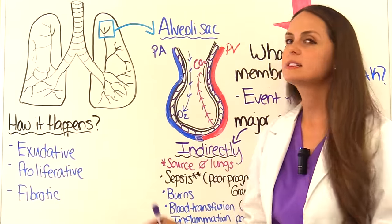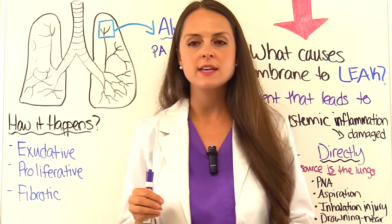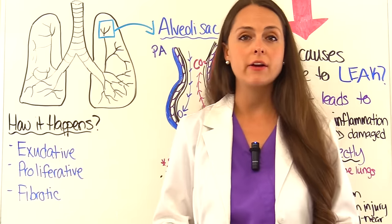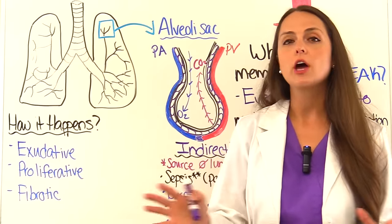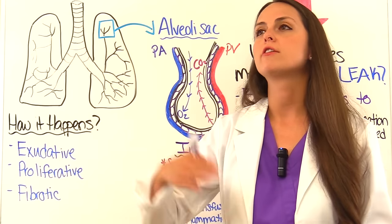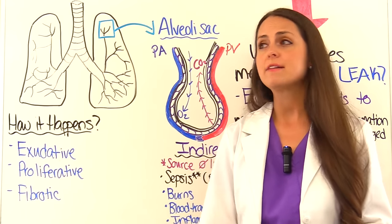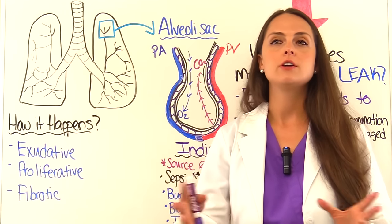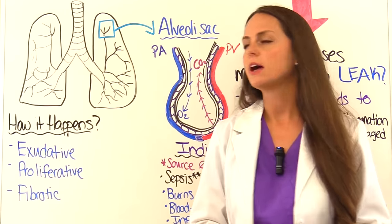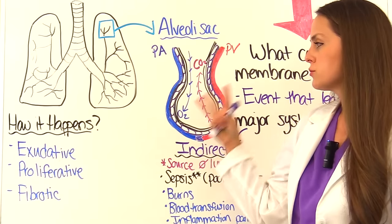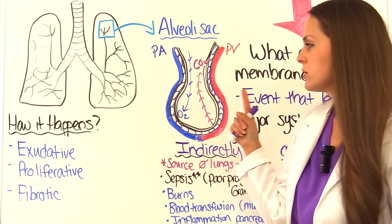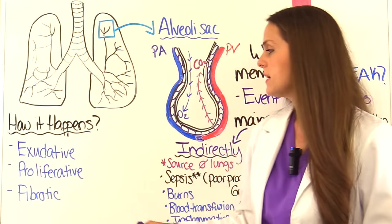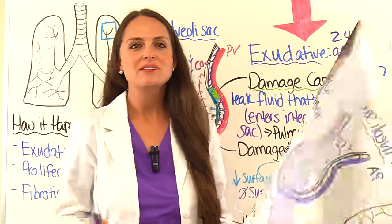Now let's talk about the pathophysiology of ARDS — how this happens. There are three phases: the exudative, the proliferative, and the fibrotic. This is the absolute worst-case scenario; not all patients go through all phases. Some patients recover faster, but if they do reach the last phase, their prognosis is very poor and they'll have significant lung damage.